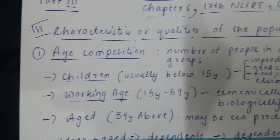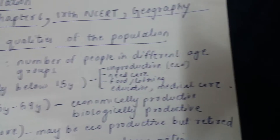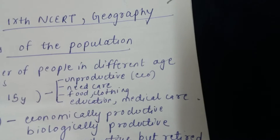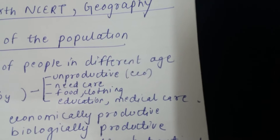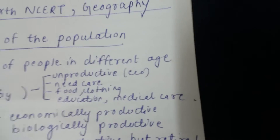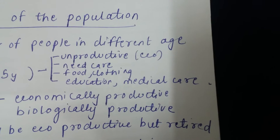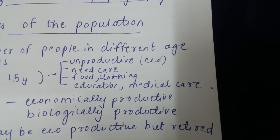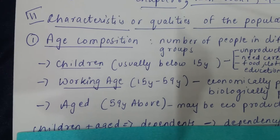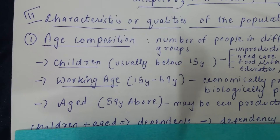Children below 15 years are economically unproductive — they don't earn their living. They depend on their father, mother, brother, or sister for their daily needs. They need care, food, clothing, education, and medical care, which means they depend on either their parents or somebody else's resources.